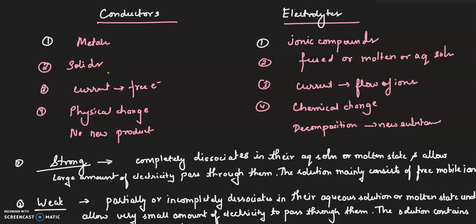For conductors, physical change takes place. That is, no new product is formed. In the case of electrolytes, chemical change takes place, and the electrolyte decomposes and new substance is formed. This is a very important difference from the exam point of view.